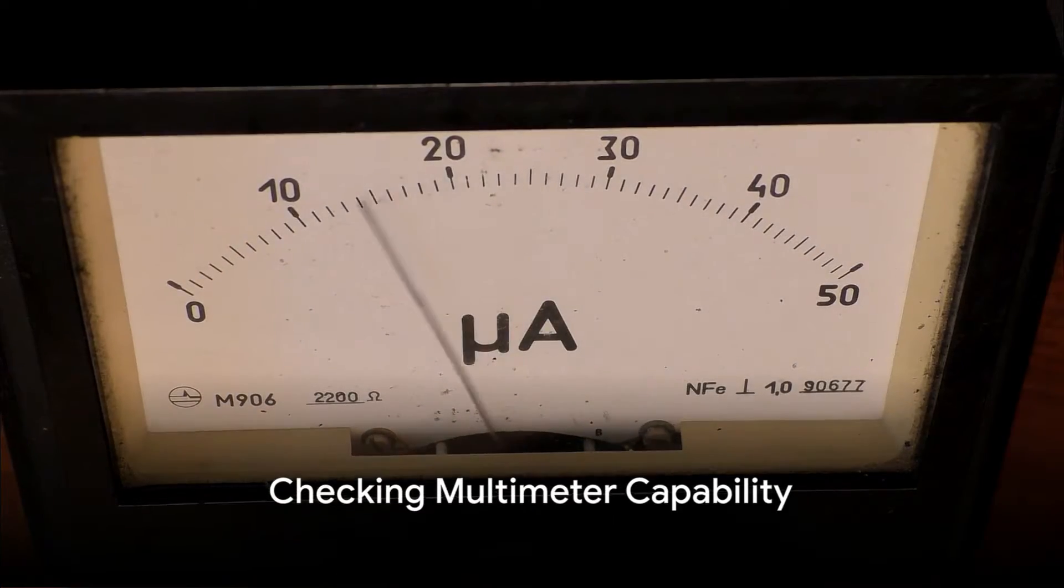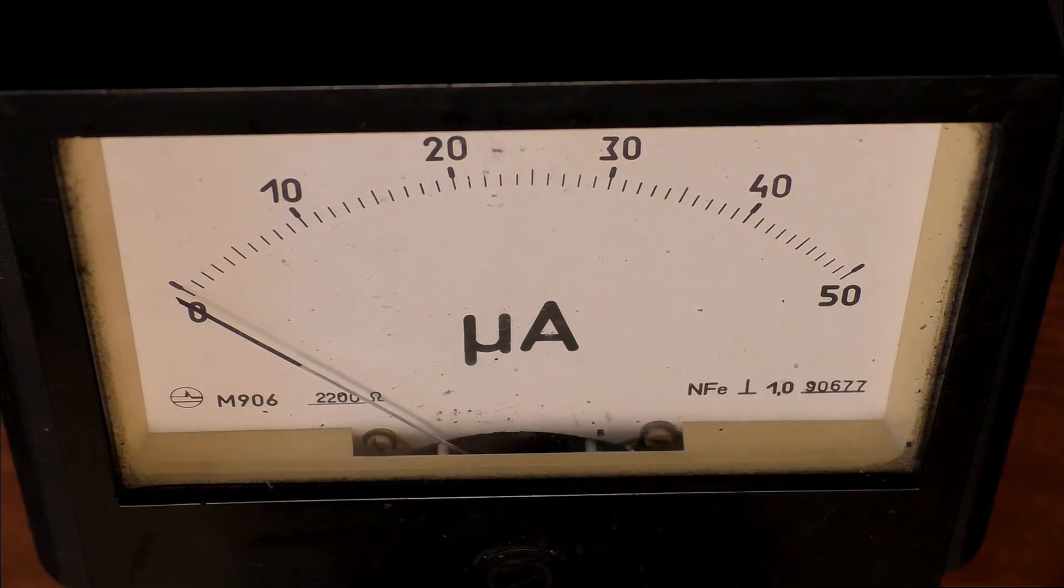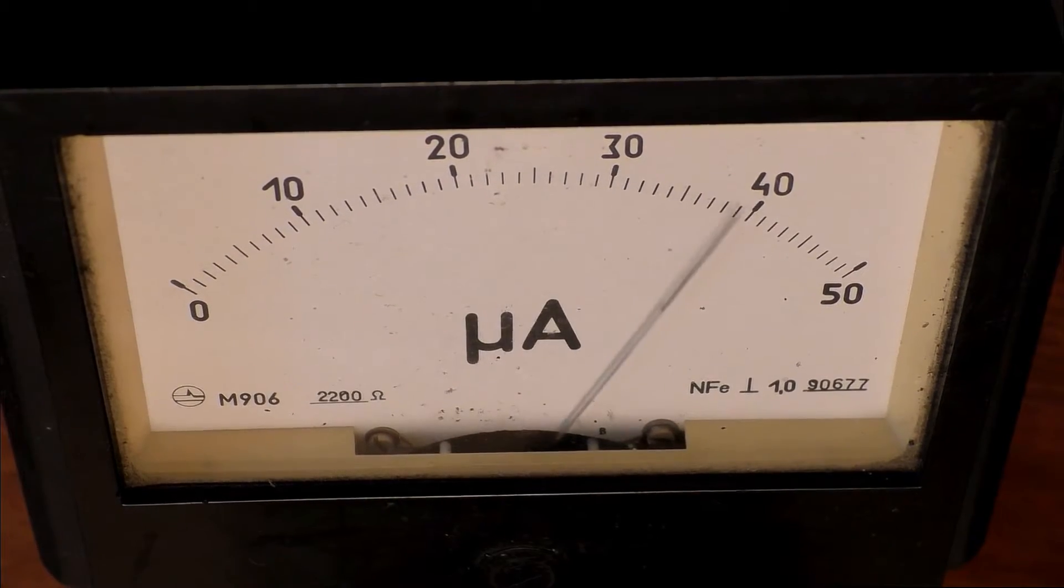First, it's essential to ensure your multimeter is capable of measuring current. Look for the MA or A symbol on the dial or display. This indicates the multimeter can handle milliampere measurements.